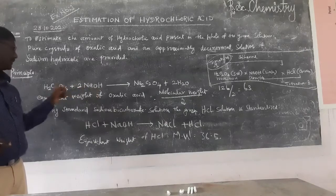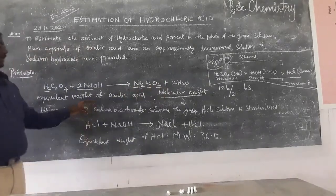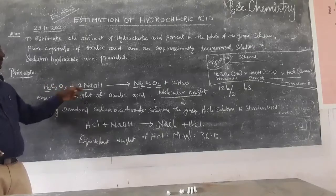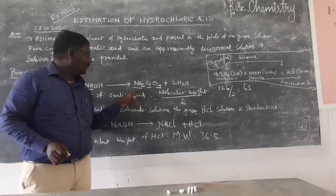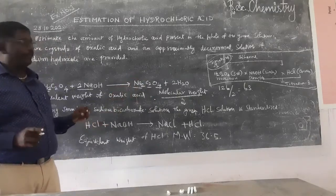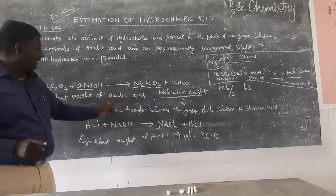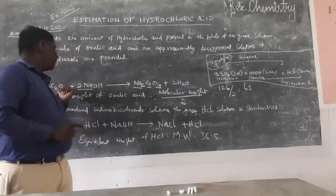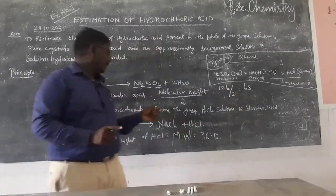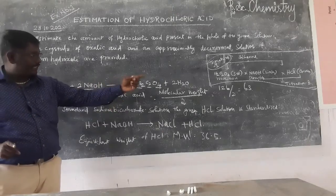The reaction: H2C2O4 with NaOH gives Na2C2O4 and two water molecules. We have a weak acid-strong base reaction and the product is Na2C2O4. This is the first titration. The equivalent weight of oxalic acid equals the molecular weight divided by 2, which is 63.